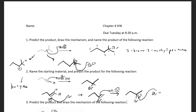Br⁻ attacks that carbocation to give us the final product. To name it: we have two bromine groups at the two position of butane, so this is 2,2-dibromobutane.